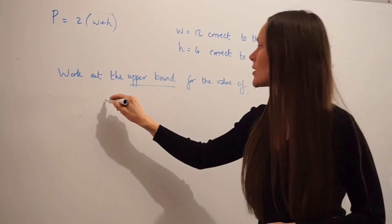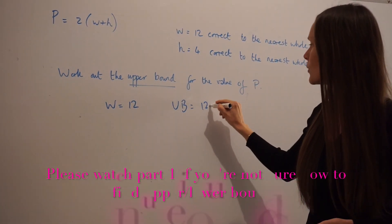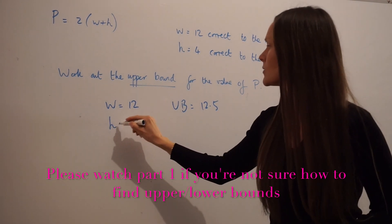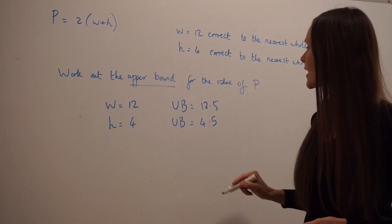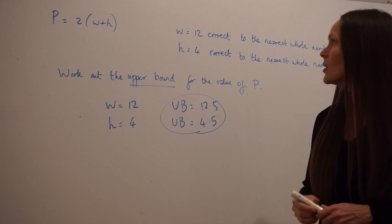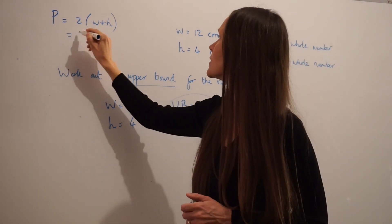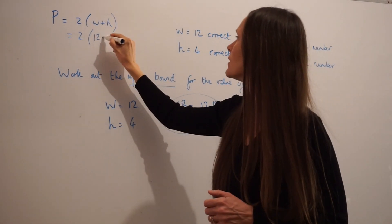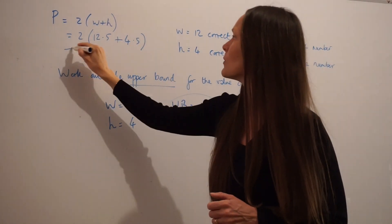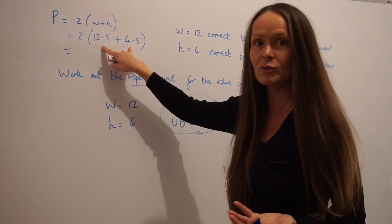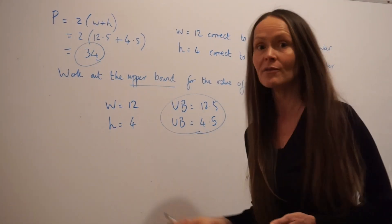So let's start with w. So w is equal to 12. The upper bound of w should be 12.5. And then if I take h, so h is equal to 4, the upper bound should be 4.5. So those are my upper bounds for w and h. Then I just need to take them and plug them into the formula. So instead of w, I'm replacing it with 12.5, and instead of h, I'm replacing it with 4.5. So add these together and then multiply the answer by 2, I get 34, which is the upper bound for the value of p.